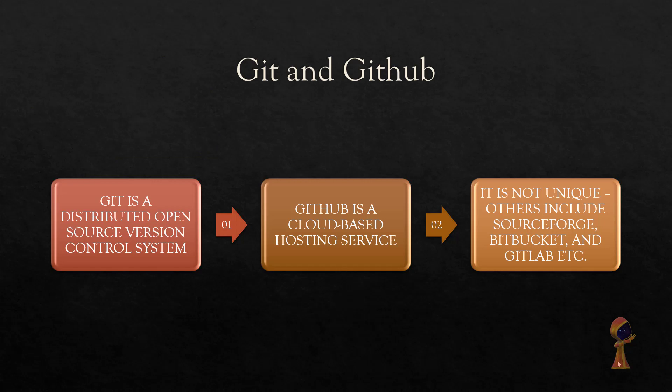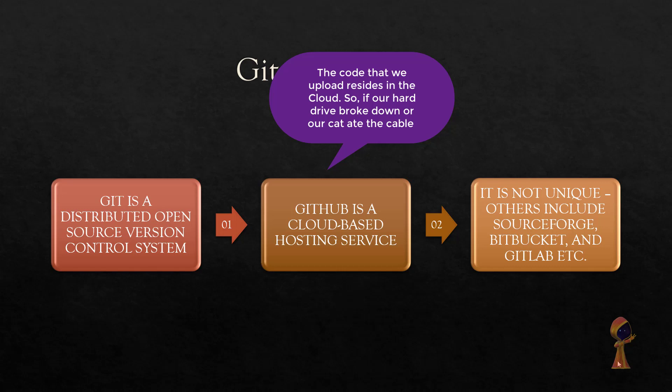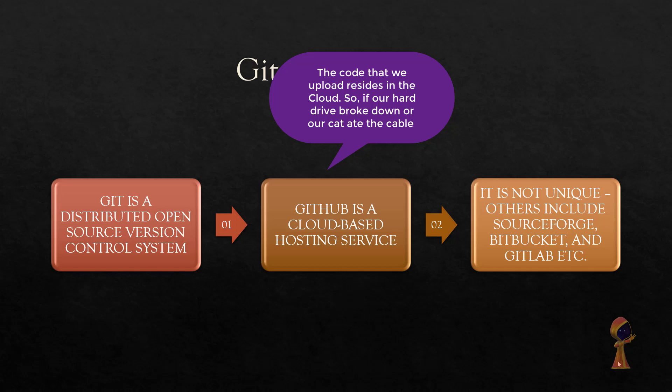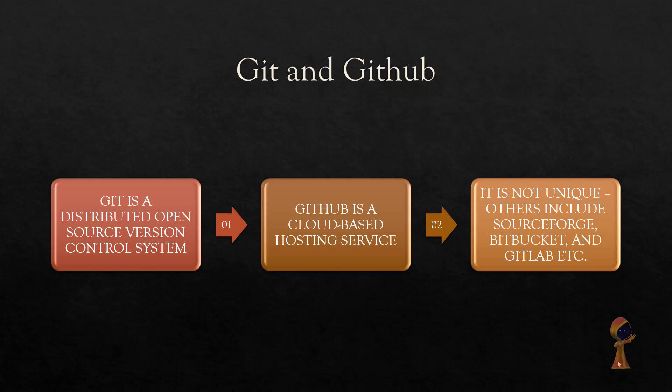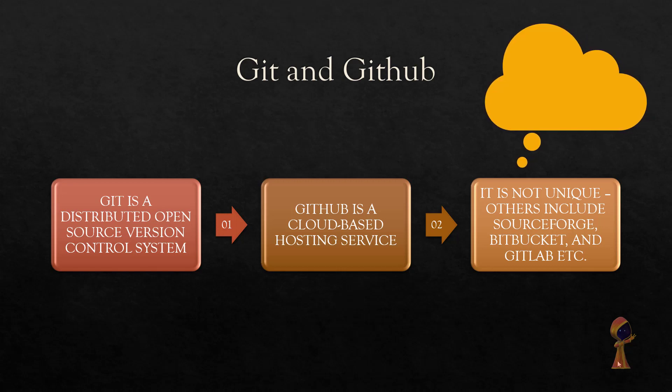Git is one version control system. There were previous version control systems like Visual Source Safe, and there are currently other version control systems as well. What is GitHub? GitHub is a host for Git. Git is one of the most popular version control systems, and GitHub is a cloud based hosting service.